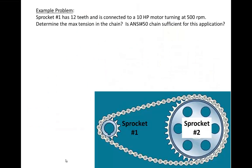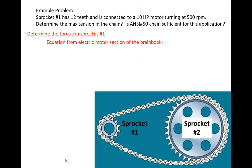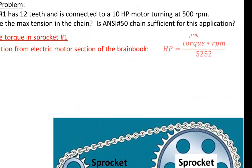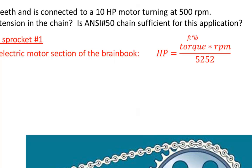Now we are ready for an example problem. Suppose sprocket number 1 has 12 teeth and is connected to a 10 horsepower motor turning at 500 RPM. Determine the maximum tension expected in the chain, and also determine if ANSI number 50 chain is sufficient for this application. The first logical step is to determine the maximum torque that can be developed by a 10 horsepower motor turning at 500 RPM, which will be directly transferred to sprocket number 1.